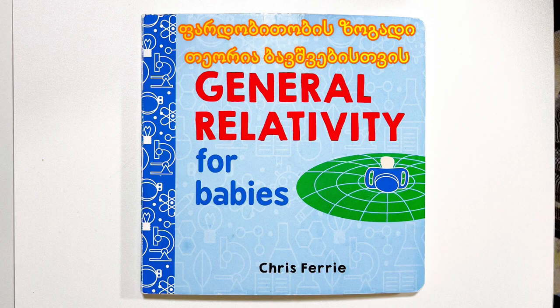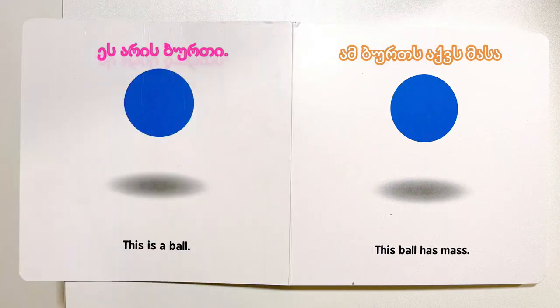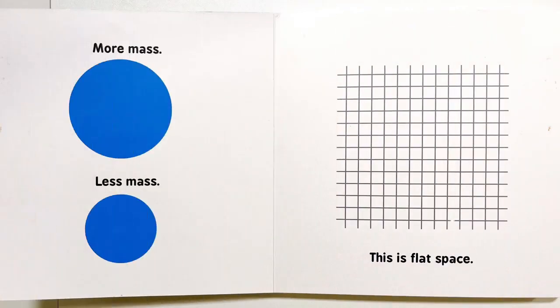General relativity for babies. This is a ball. This ball has mass. More mass, less mass.